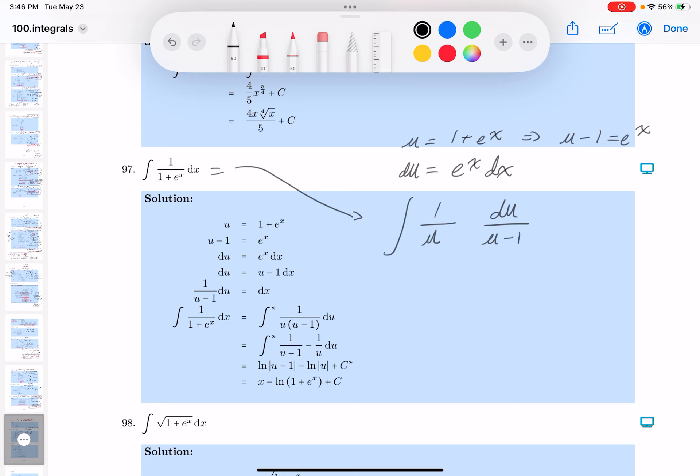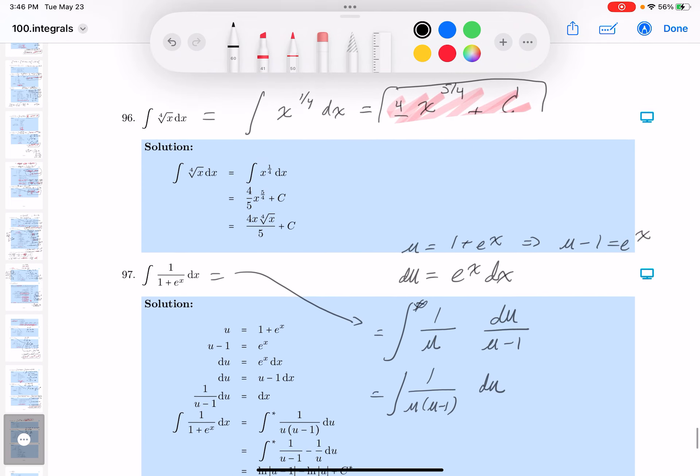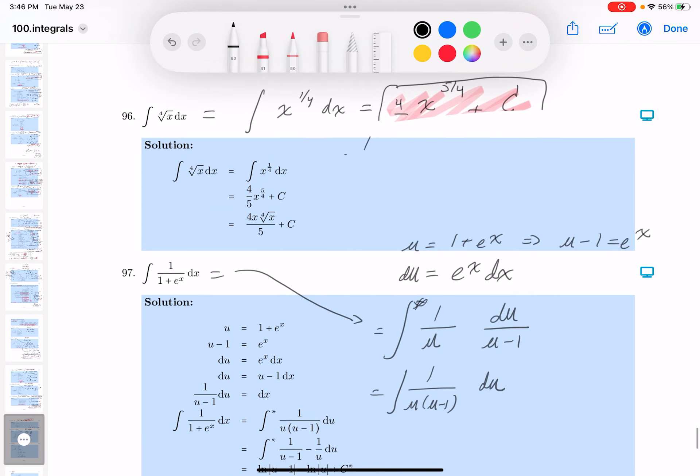I'm starting to see maybe it's partial fractions. Let's take a look. So let me write this down for you. And this is going to be 1 over u times u minus 1 du. Let me do my partial fractions. I'll do it on the side for you. So 1 over u times u minus 1 equals a over u plus b over u minus 1.